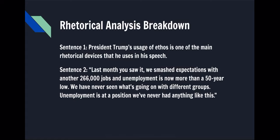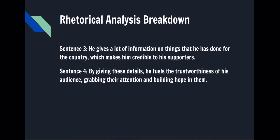This is an example of a body paragraph. Rhetorical analysis breakdown. Sentence one: President Trump's usage of ethos is one of the main rhetorical devices that he uses in his speech. Sentence two: 'Last month you saw it. We smashed expectations with another 266,000 jobs and unemployment is now more than a 50-year low. We have never seen what's going on with different groups. Unemployment is at a position we have never had anything like this.' Sentence two shows a line from his speech that is an example of ethos. Sentence three: He gives a lot of information on things that he has done for the country, which makes him credible to his supporters.